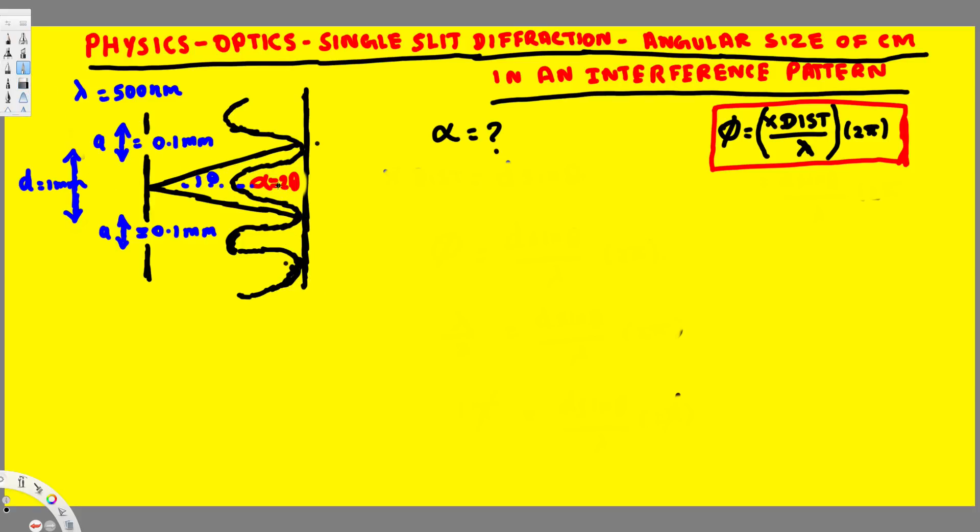Now here we know that the angular size of the central maximum is given by alpha. Alpha is equal to 2 theta because if we consider this angle, the angle with the center, and this one is theta, then alpha is the total angle that's going to be equal to 2 theta. Now to find this one we can use this equation.